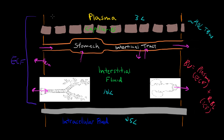So blood volume is a compartment that includes plasma (extracellular fluid) plus red blood cells (intracellular fluid). When we talk about the vasculature and extracellular fluid, we're talking about plasma, which is 3 liters.